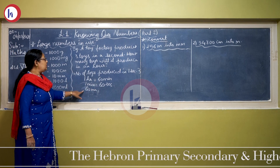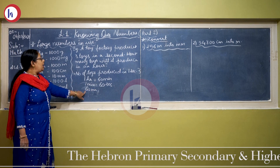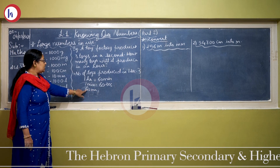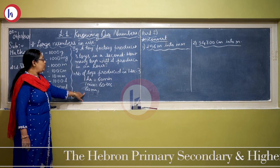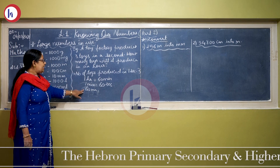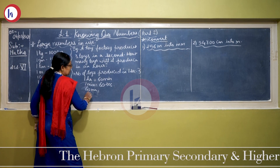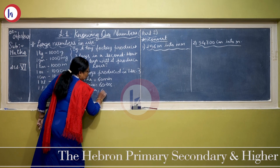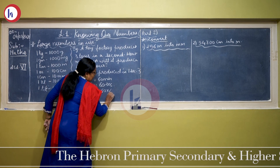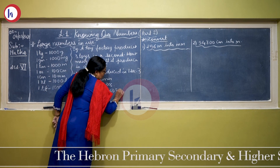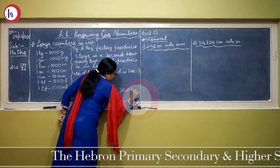1 minute is equal to 60 seconds. So in 60 minutes — 60 minutes means 1 hour — how many seconds are there in 1 hour? It will be 60 minutes multiplied by 60 seconds, equal to 3600 seconds.